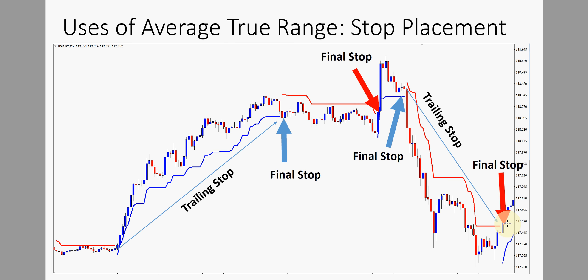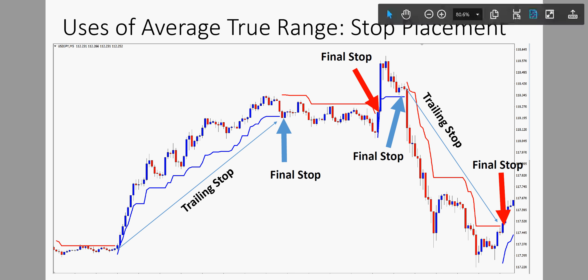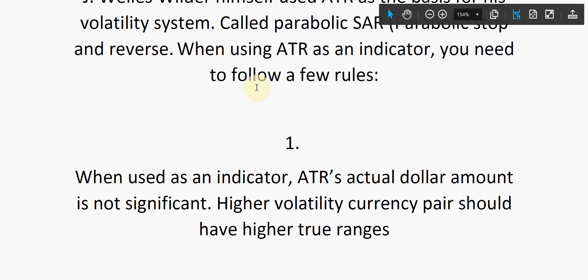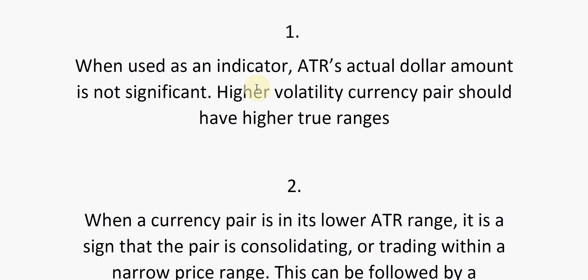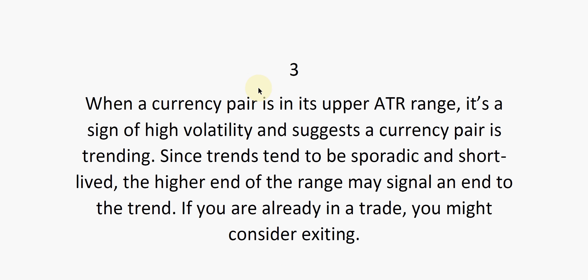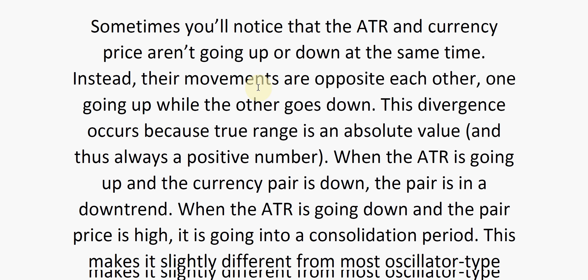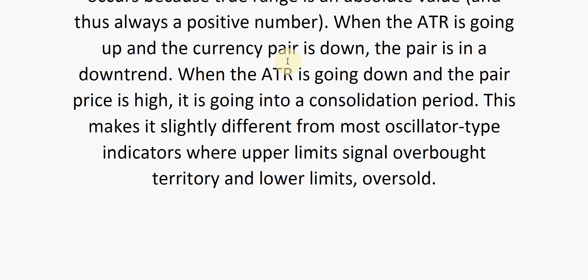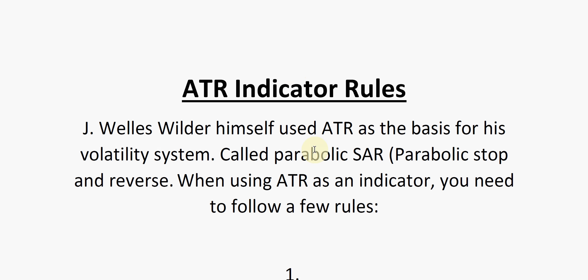If you are going to use ATR as an indicator, there are four rules you need to be mindful of. I have put these four rules in a PDF file. Rule number one: when used as an indicator, the actual dollar amount is not significant. Higher volatility currency pairs should have higher true ranges. I won't read all of them here, but if you want these PDF files on the uses of ATR, I am happy to send them across to you.